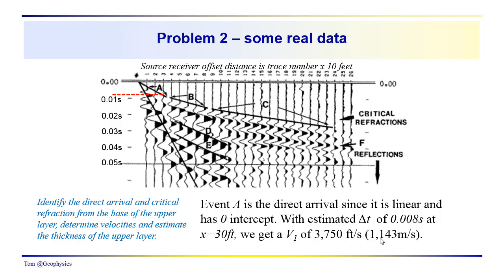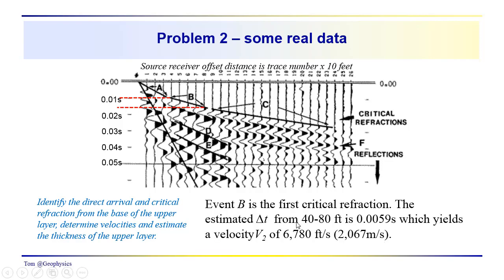And also event B is going to give us V2, so we have a delta T from 40 feet to 80 feet, that's the delta x there, is 0.0059, so we're looking at this difference in time here between this arrival and this arrival. So, I get 0.0059 seconds, this yields a velocity of 6,780 feet per second, about 2,067 meters per second. So, we have V1 and V2 that we've obtained from this. Now, what other data can we use at this point?